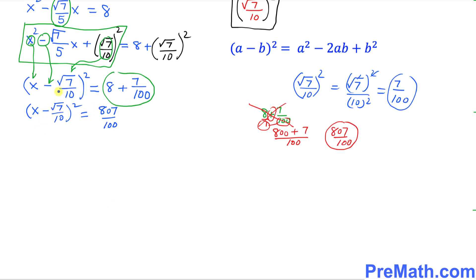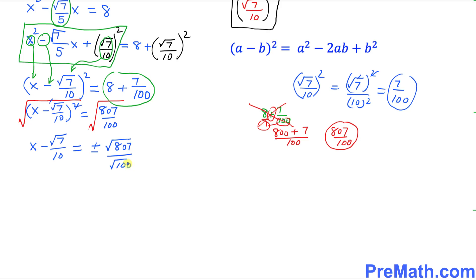In the next step, we want to remove the square, so we take the square root of both sides. The square and square root cancel on the left, giving us x minus √7/10 equals positive or negative √807 divided by √100, which simplifies to ±√807 / 10.